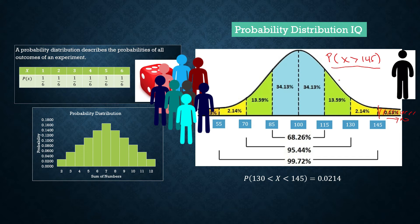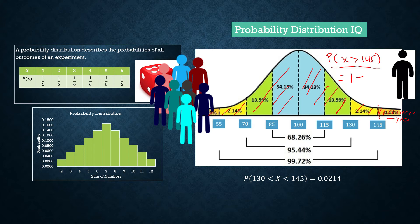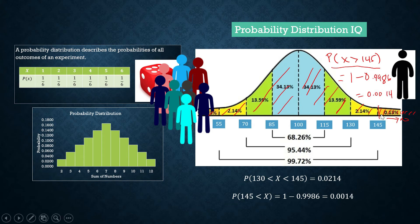The area of the entire region under the curve is 1. So we compute 1 minus the area to the left of the mean (0.5) minus the remaining regions to the left of 145. The result is the area from 145 to positive infinity, which equals 0.0014. This is the probability that a randomly selected person has an IQ higher than 145.